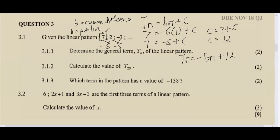We can verify: negative 5(1) + 12 = 7; negative 5(2) + 12 = 2; negative 5(3) + 12 = negative 3. The general term confirms all three values. This is the same concept as the rule from functions and relationships in grade 8 and 9 — input gives output.